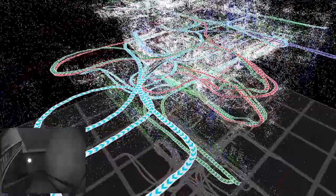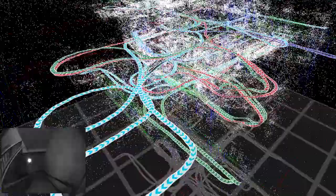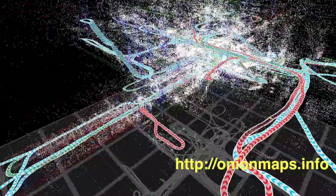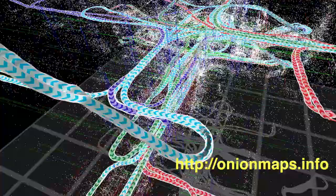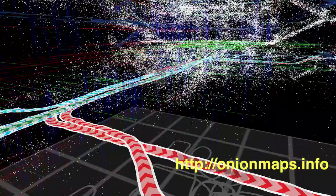Here, we can observe the resulting point cloud of mapped landmarks as well as the merged trajectory. The visualization tool shown here can be found online at onionmaps.info. Please navigate to this page for further investigation of our cooperative mapping result.